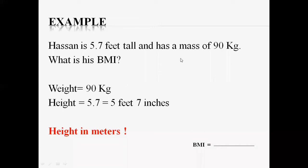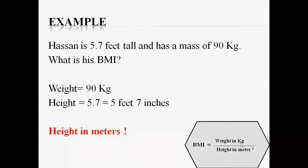The weight of Hassan is 90 kg, and the height is 5 feet 7 inches. According to the metric BMI formula, weight is in kg, so the weight measurement matches. However, the height of Hassan is given in feet and inches, but in the formula, height must be in meters squared. So we have to convert this height into meters.